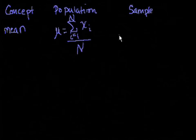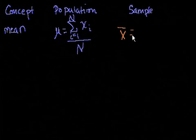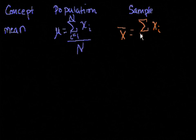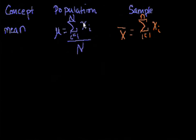The sample mean is the same thing, just with slightly different terminology. We write it as x-bar — x with a line on top — and that equals the sum of all data points in the sample. Since a sample is smaller than the population, lowercase n is less than big N. You divide by the number of data points you added to get the sample mean.